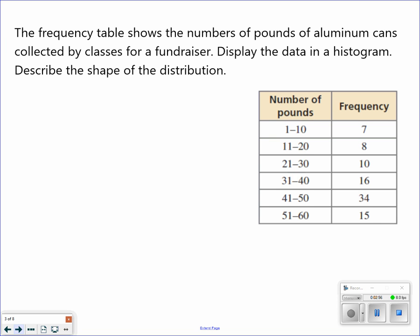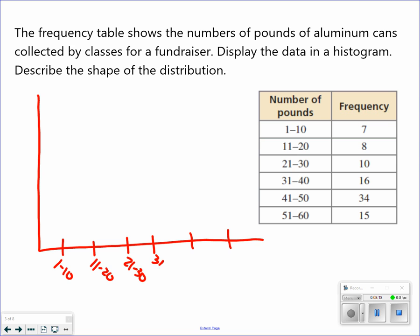So now the frequency table shows the number of pounds of aluminum collected by the class at a fundraiser. Display the data as a histogram and then describe the shape. So I'm going to make a giant L here. And once again, it's already giving me the ranges. So the first range is 1 to 10. Next one's 11 to 20, 21 to 30, 31 to 40, 41 to 50, and 51 to 60. And this data goes all the way up to 34. So I'm really going to need to make sure I go by an increment that can get all of those. So I'm going to go by 5.